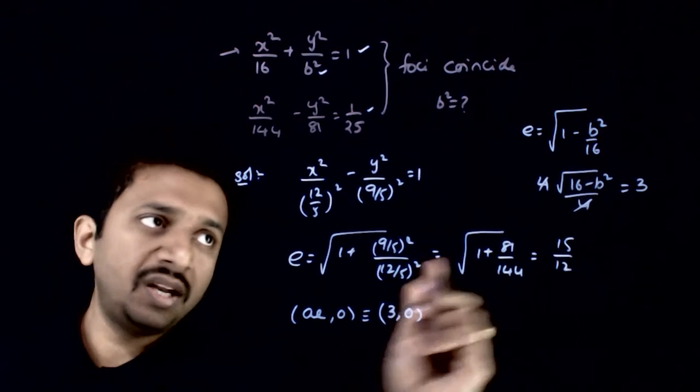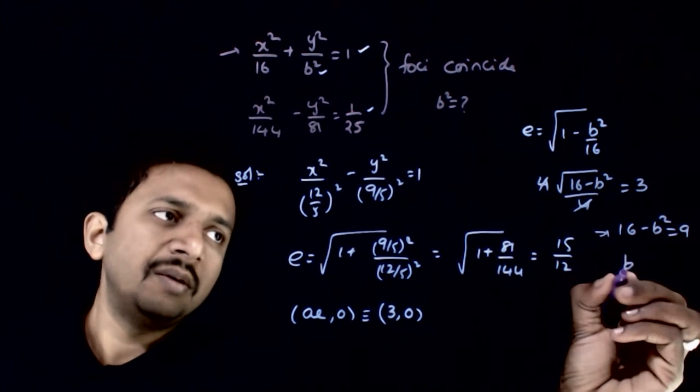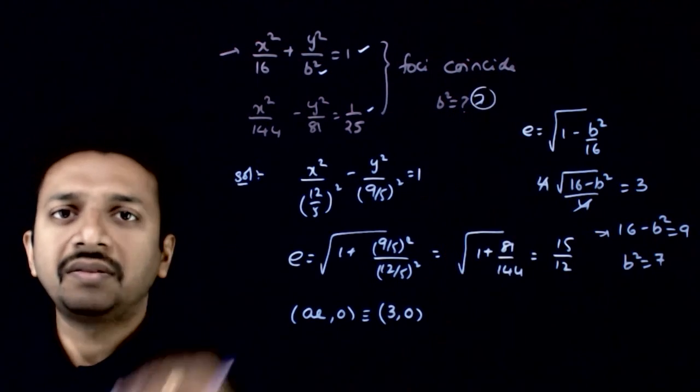This has to be exactly equal to 3. This implies 16 minus b² equals 9. b² has to equal 7. So 7 is the answer to this question. Thank you.